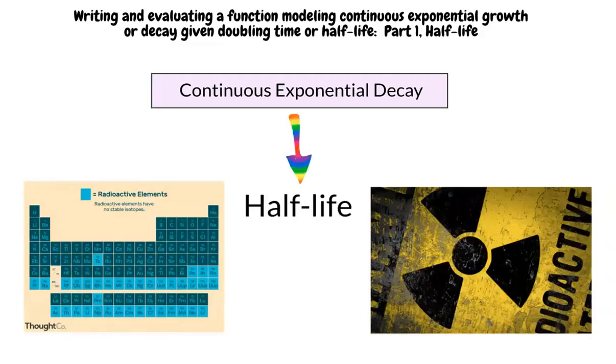Okay, what kind of problems use continuous exponential decay? Continuous exponential decay is often used for determining the half-life of a substance. Half-life is the time it takes for the substance to decrease by half. This is commonly used in chemistry with unstable or radioactive molecules.